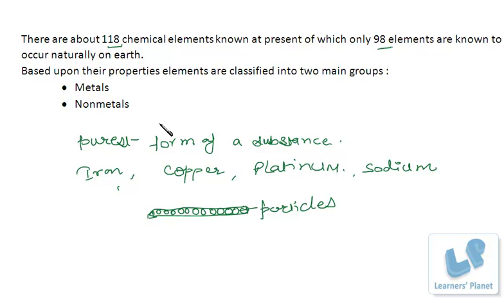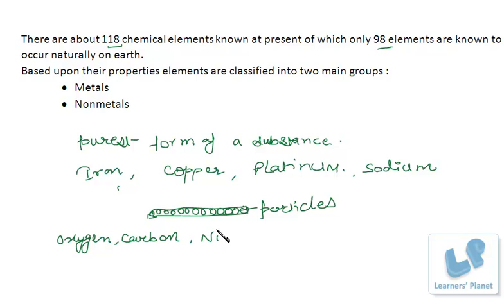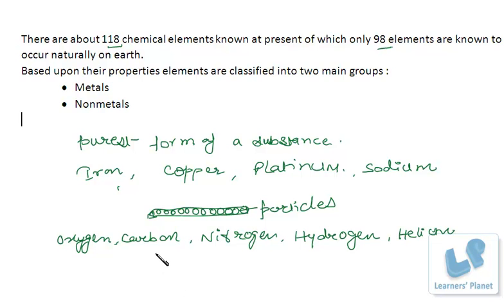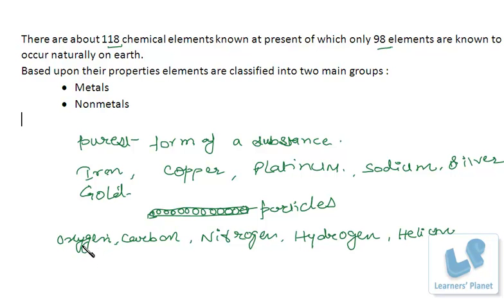Now let's see what properties differentiate metals from non-metals. Non-metals include oxygen, carbon, nitrogen, hydrogen, and helium — helium is the gas filled in balloons that fly high. Metals include silver and gold. These are two different groups of elements. Let's see the physical properties of metals first.